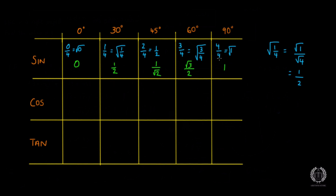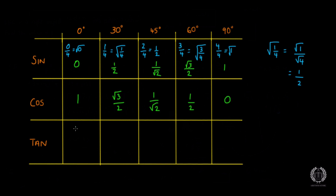For cos, all you're going to do is take what you have for sine and write it in reverse order. So sine 90 was 1 — that comes first for cos. Then root 3 over 2 comes next, then 1 over root 2 stays in the middle, then a half, then 0. I'm basically rewriting the sine values in reverse order: 1, root 3 over 2, 1 over root 2, half, 0. That's literally it for cos.